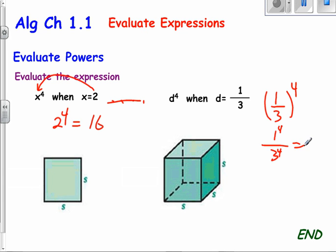So I know that 1 to the fourth power is 1, 3 to the fourth power, 3 times 3 is 9, times 3 is 27, times 3 is 81. So my answer in that case would be 1 over 81.